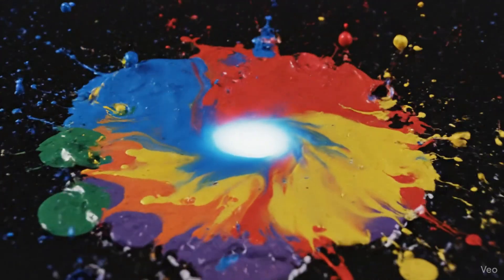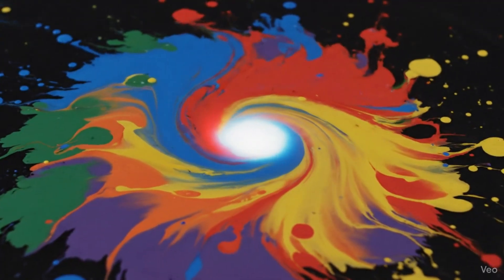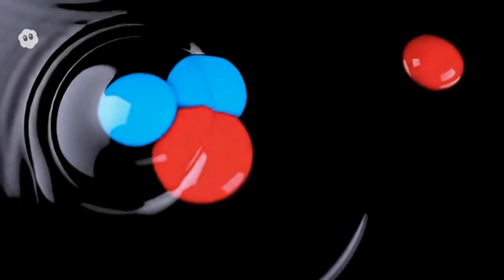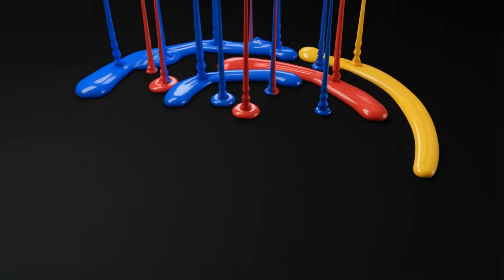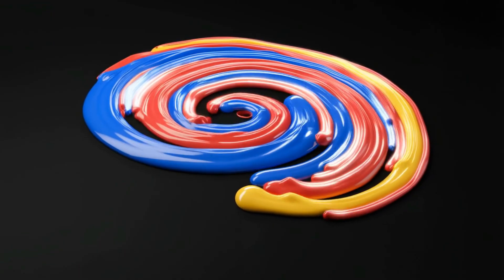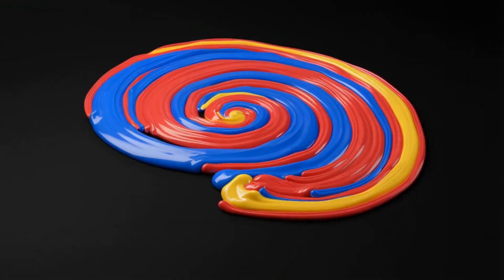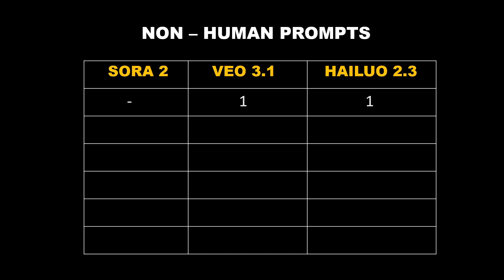VO 3.1 actually nailed the motion and lighting a bit better than Sora 2. The paint movement looked smoother, and the overall glow felt more natural. HiLaw 2.3 came surprisingly close though, almost on par with VO's quality, especially considering it's still new. So for this round, I'd say VO 3.1 gets one point, and HiLaw 2.3 also earns one point for holding up that strong.